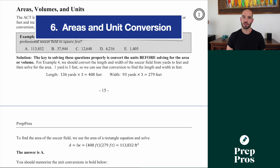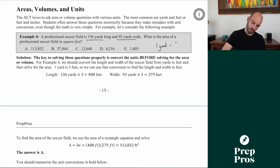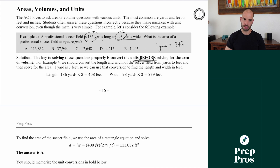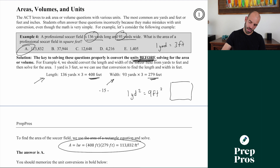Next let's talk area, volume, and units — a topic you might not have seen much in school. The ACT loves to mess with units. For example: a professional soccer field is 136 yards long and 93 yards wide — what is the area in square feet? The mistake everyone makes is finding the area in yards first and then dividing by 3. Instead, you must convert units before finding area or volume. Convert 136 yards to 408 feet and 93 yards to 279 feet, then multiply to get 113,832 square feet. One square yard equals nine square feet because 1 yard equals 3 feet, so you must convert first.